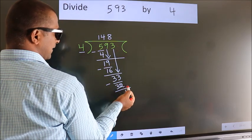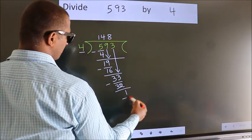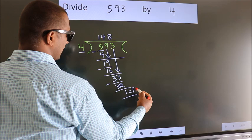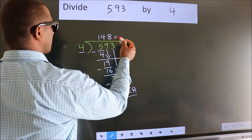No more numbers to bring down. So we stop here. This is our remainder. This is our quotient.